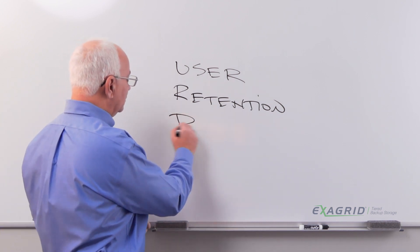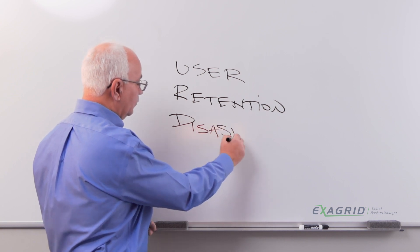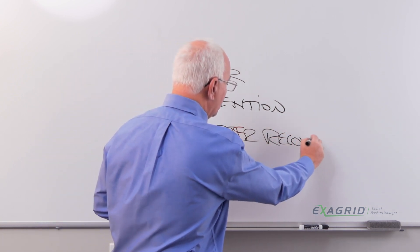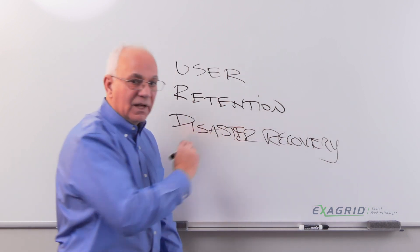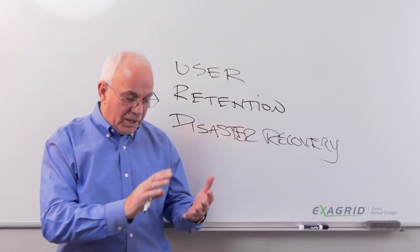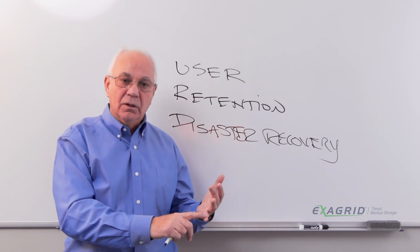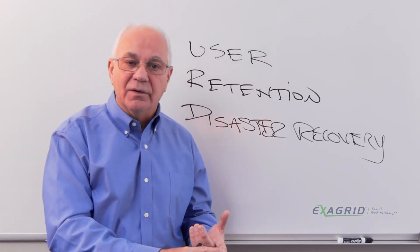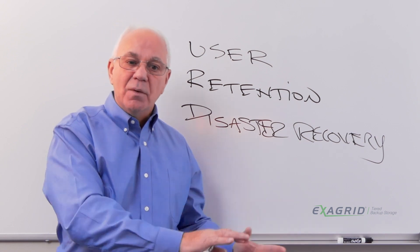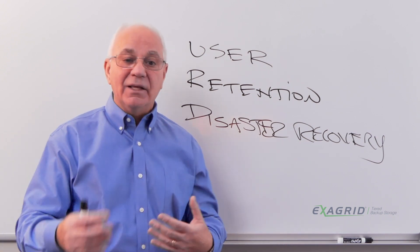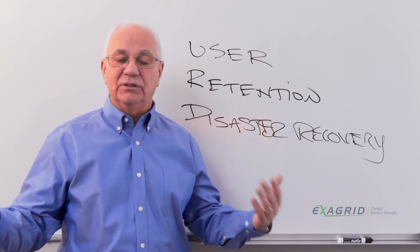The third reason is disaster recovery. If you have something happen to your main data center, a hurricane or tornado, maybe a flood, maybe a fire, you need to be able to bring that data center up somewhere else to keep your operations going. If you can't keep your operations going, you won't be able to continue your business.